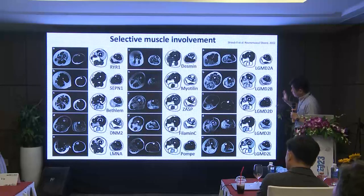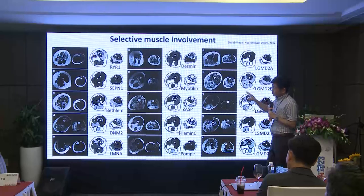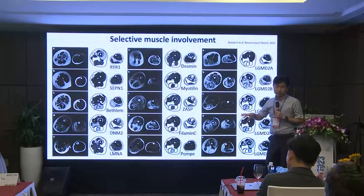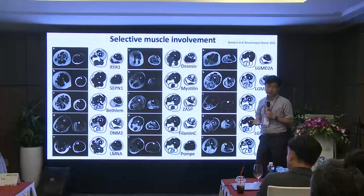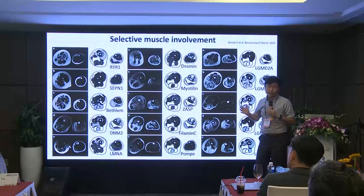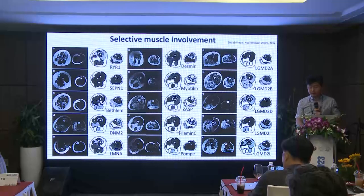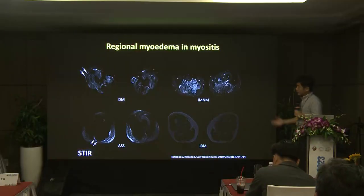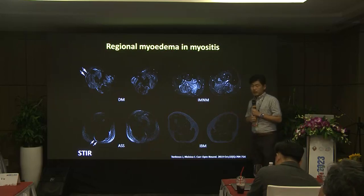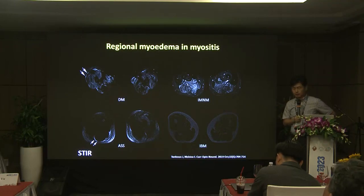In hereditary muscle disease, almost all conditions involve certain muscles very selectively. By recognizing the pattern of muscle involvement on muscle imaging, some people say we can even make a diagnosis or at least narrow down the differential diagnosis. Just saying proximal weakness is not enough at all nowadays.